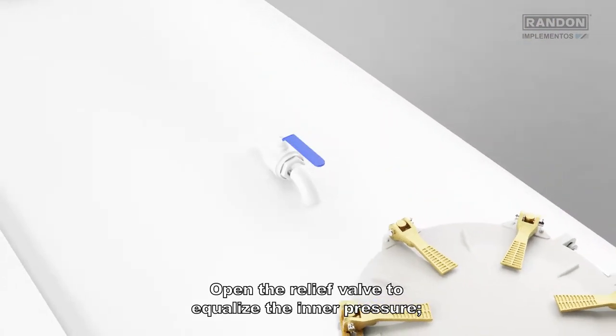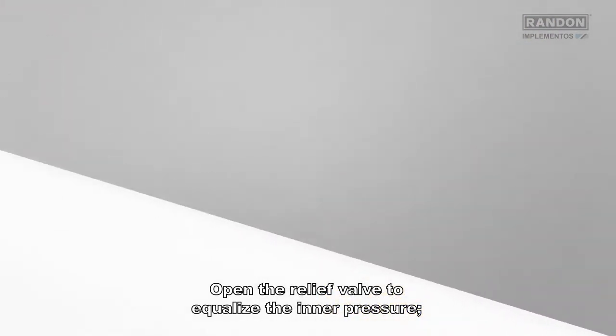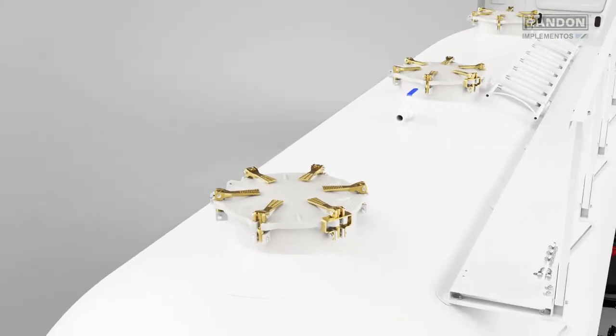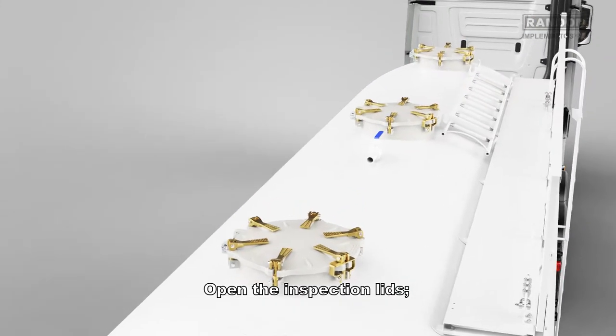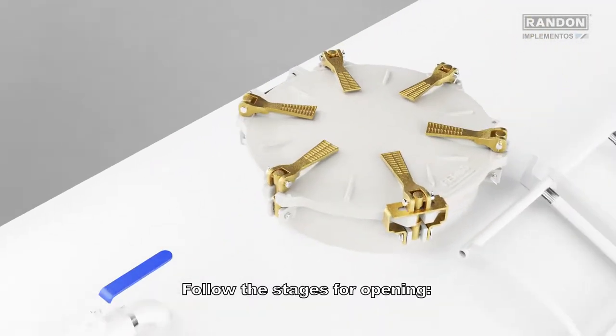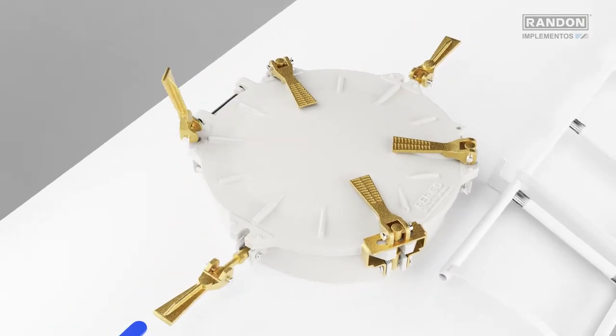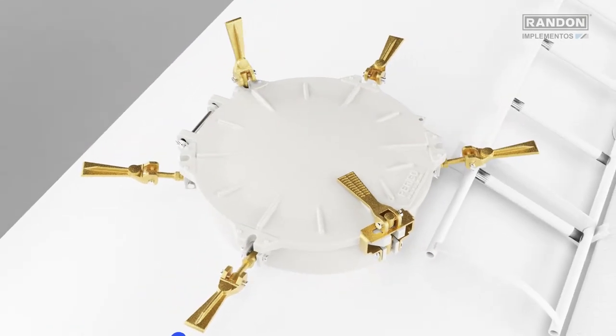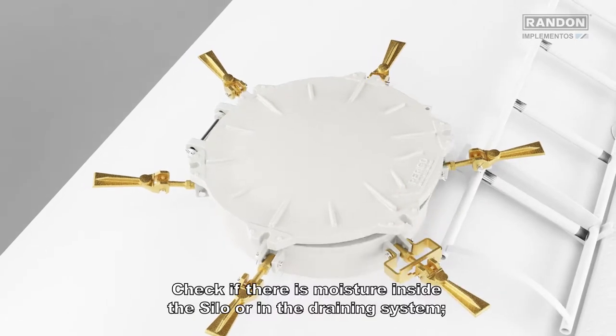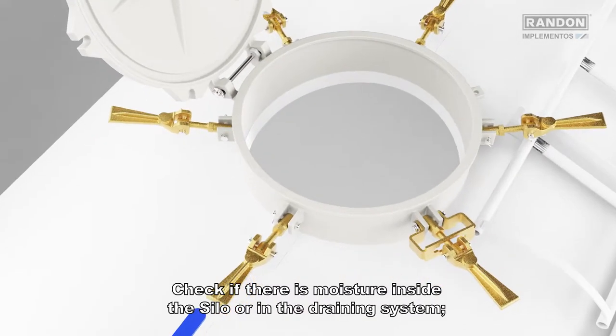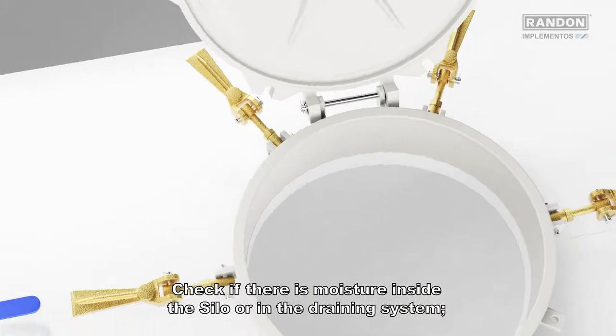Open the relief valve to equalize the inner pressure. Open the inspection lids. Follow the stages for opening. Check if there is moisture inside the silo or in the draining system.